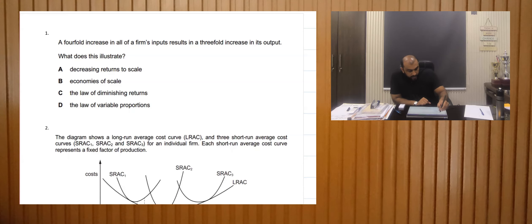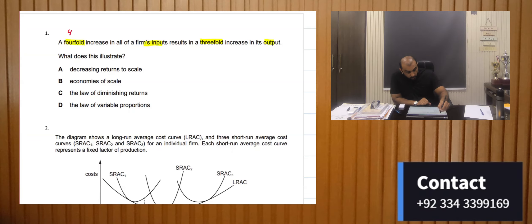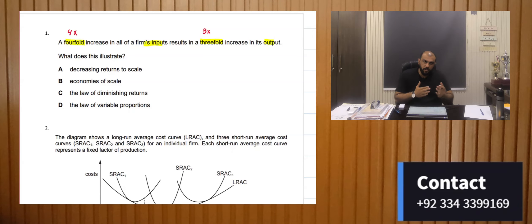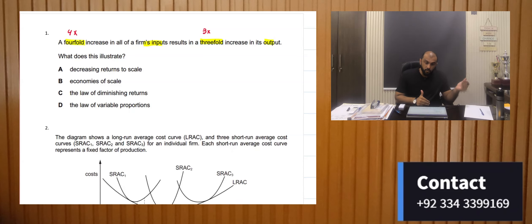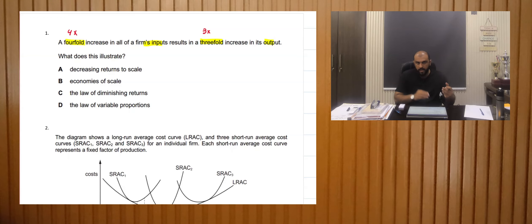A four-fold increase in all firm's inputs results in a three-fold increase in output. Four-fold means four times, three-fold means three times. The factors of production are increasing four times whereas the output is increasing three times. This is bad for the organization and this concept is known as diminishing returns to scale, or decreasing returns to scale.